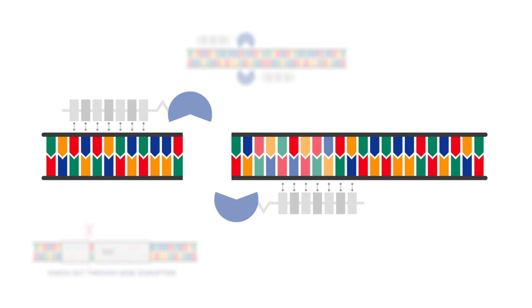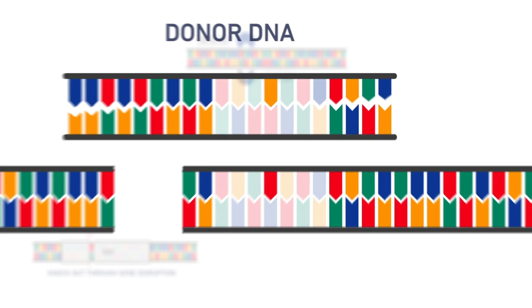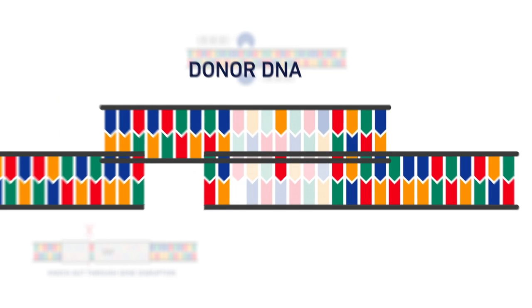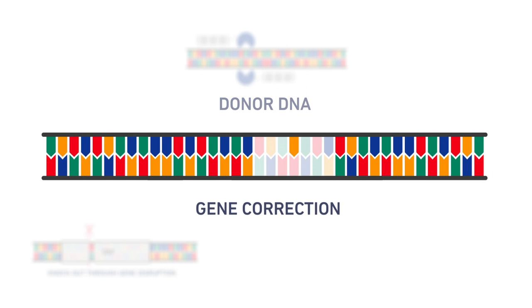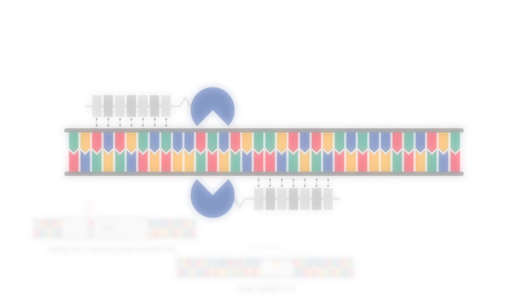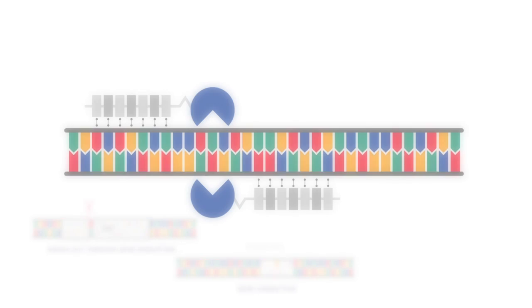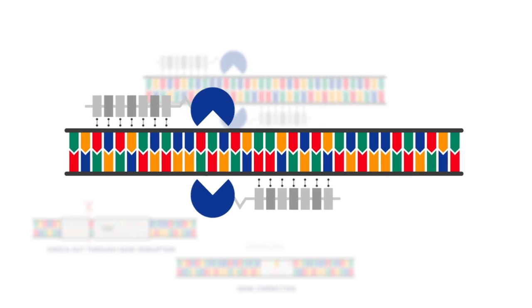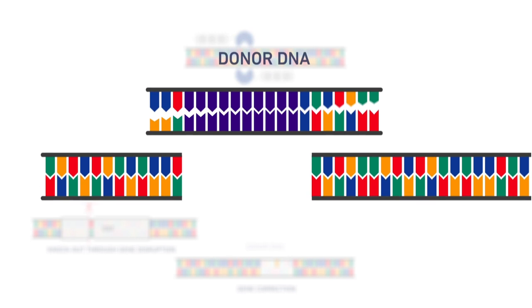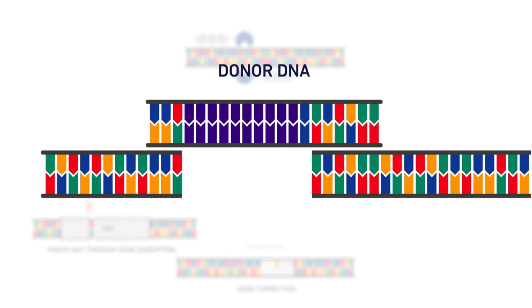Another option is to insert DNA sequences into the cut DNA. This process uses small areas of homology in the new donor DNA to correct the DNA sequence or insert new DNA sequences. Ideally, the insert sequence has overlapping homologous sequences on each side of about 300 to 500 base pairs.